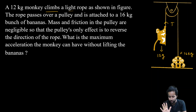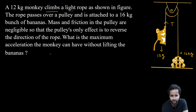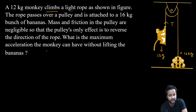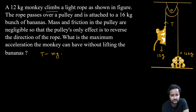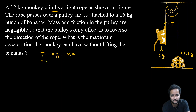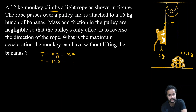Hum aise solve karenge ki banana just upar uthe. Pehle socho: agar monkey 'a' acceleration se upar ja raha hai, toh monkey ke upar T minus mg equals to ma likhenge. Yahan m ka value hai 12, g ka value hai 10, toh mg = 120. Toh T minus 120 equals to 12a. Yeh hua Equation number 1.